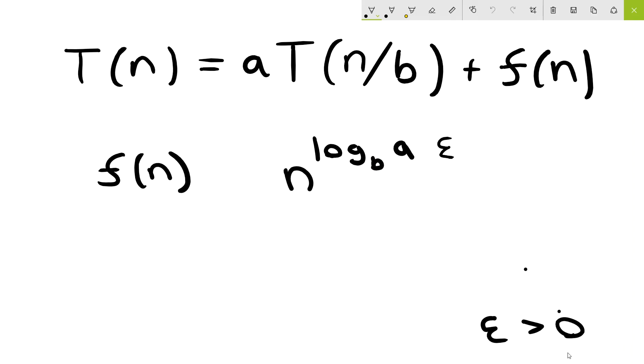So rule number one is the case when f of n is less than n log base b of a minus epsilon for all significantly large n's. So in algorithm speak, we can say that f of n is o of n log base b of a minus epsilon for this case.